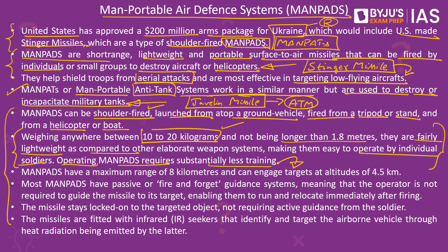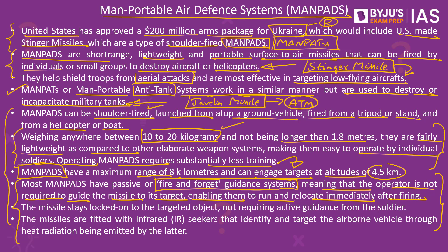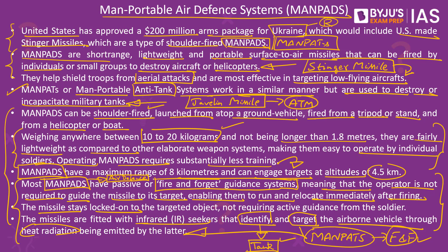MANPADS designed for air defence come with a range of 8 kilometres and can engage aerial targets at altitudes of 4.5 kilometres. These systems come with a fire-and-forget guidance system, which means the soldier using the weapon need not worry about guiding the missile to its target — he just needs to fire, then run and take cover. The missile stays locked onto the target because these missiles are fitted with infrared seekers that identify and seek out the target by tracing the heat signature of the aircraft. The reason Ukrainian forces have been able to resist the Russian invasion is mainly because they have been effectively using the MANPADS and MANTADS supplied by the US and NATO, which has led to significant damage against Russian aircraft and battle tanks.